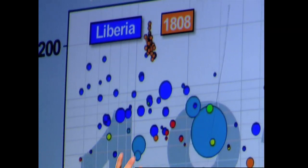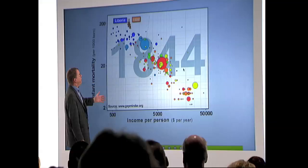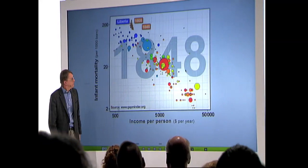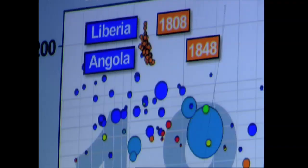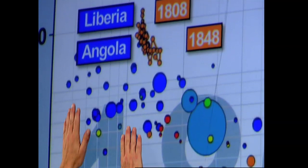Then Sweden started to improve, but very, very slowly. We still hadn't started schooling for everyone. It was very slow and it went like this and that, nothing to be proud about. And finally, after about 40 years, we were like Angola.